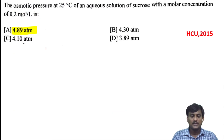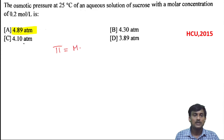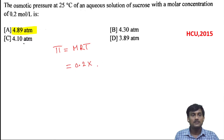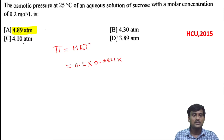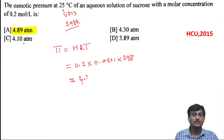The osmotic pressure at 25 degree centigrade of an aqueous solution of sucrose with molar concentration of 0.2 mole per liter. We know the relation between the osmotic pressure and concentration: π is equal to MRT. Here M is 0.2, R is 0.0821 liter atmosphere, and T is 25 degree centigrade. When you convert into Kelvin, you add 273, so it will be 298 Kelvin.